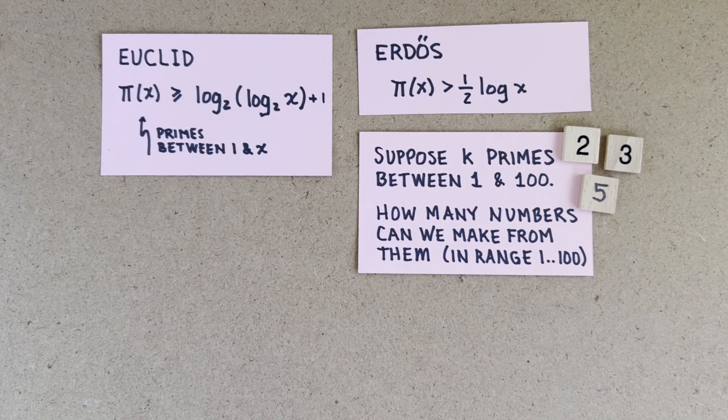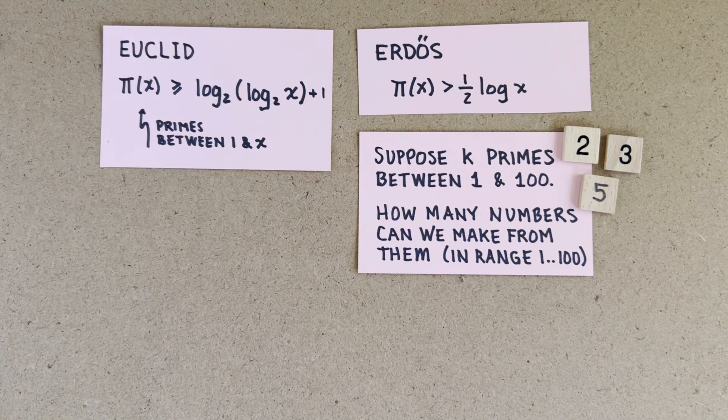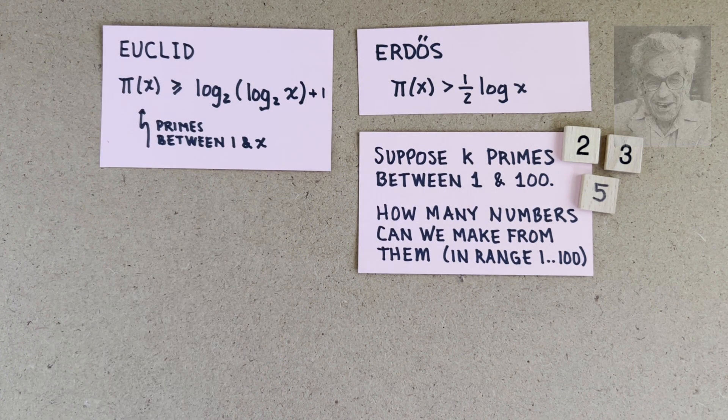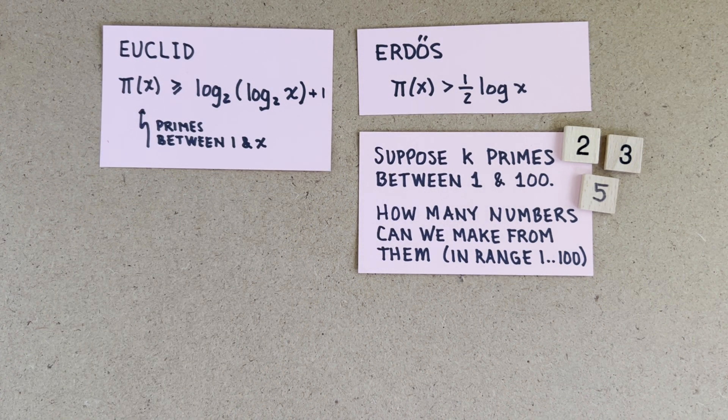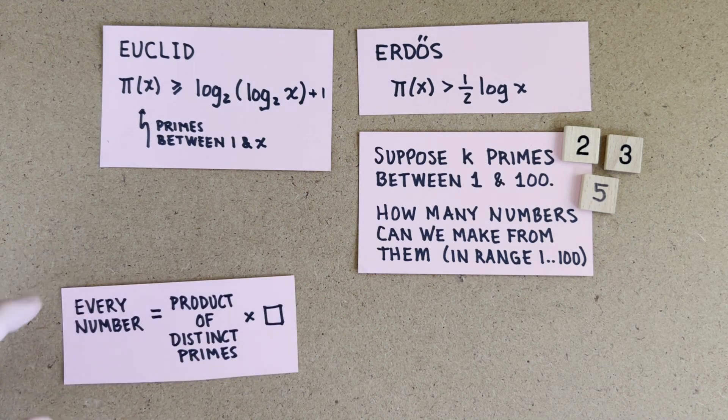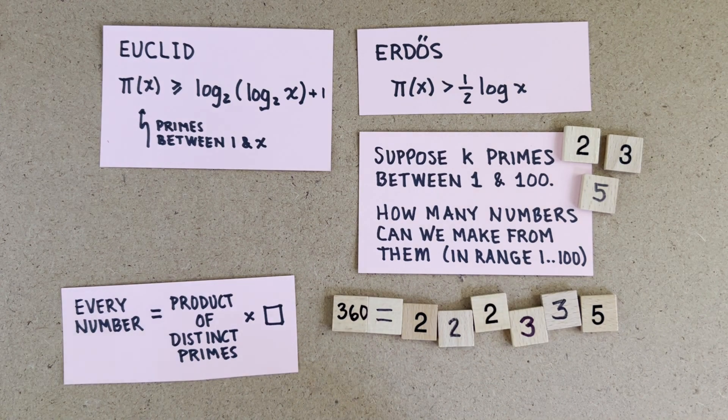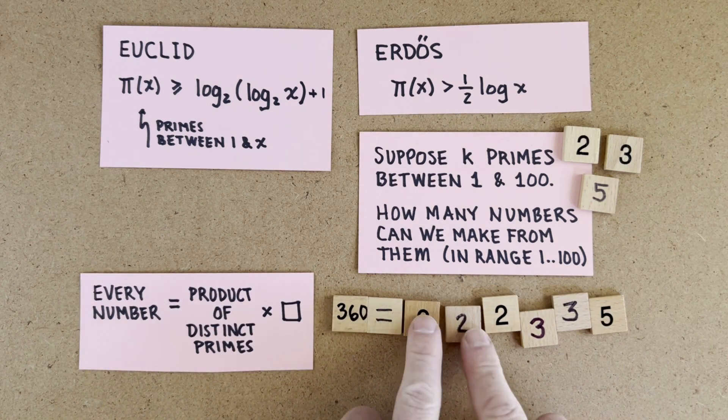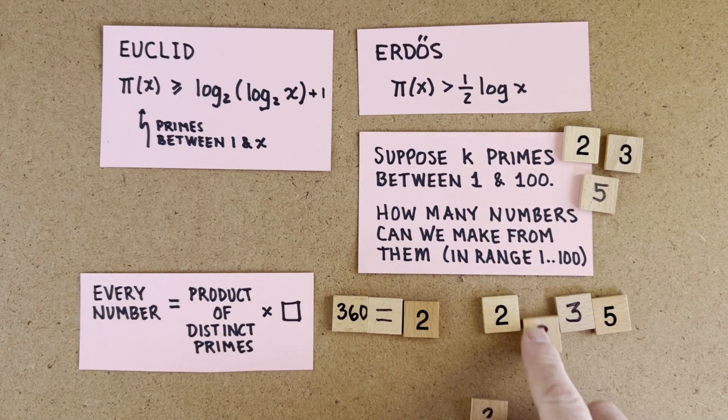Can we do better than Euclid? Yes, the mathematician Paul Erdős did better. He said, suppose there's k primes. How many numbers from 1 to 100 can we construct using those k primes? First, Erdős pointed out that every number in the universe can be constructed as the product of distinct primes times a square.